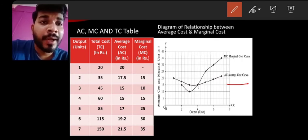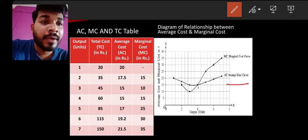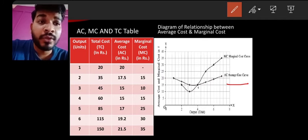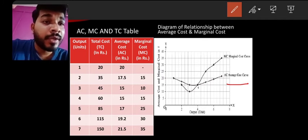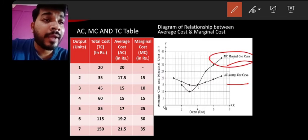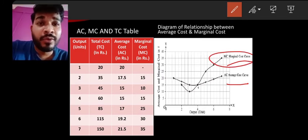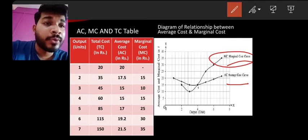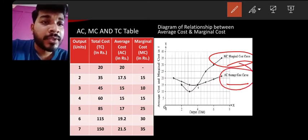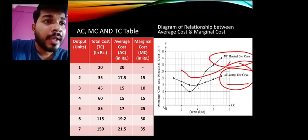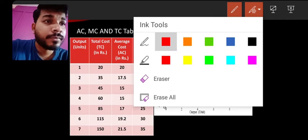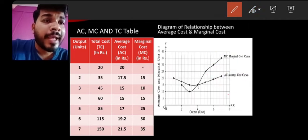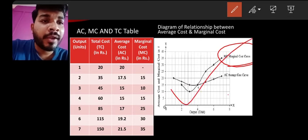Now let's plot the marginal cost curve. Starting from the 2nd unit, MC = 15. At the 3rd unit, MC = 10, which is lower. At the 4th unit, MC = 15 again — a U-shape is forming. Then at the 5th unit MC rises sharply to 25, at the 6th unit to 30, and at the 7th unit to 35. The MC curve looks like a hockey stick — it falls and then rises steeply.